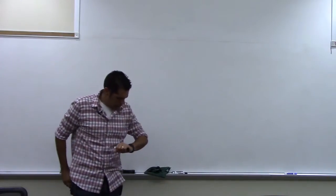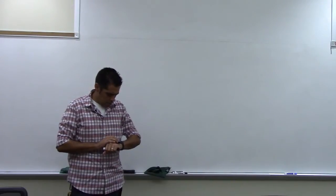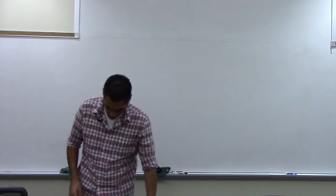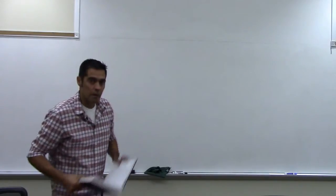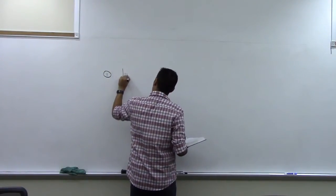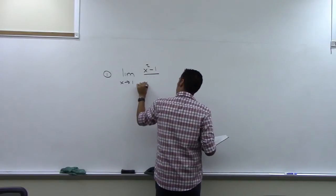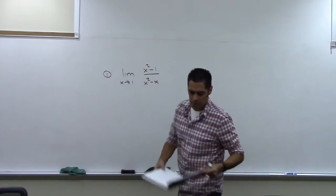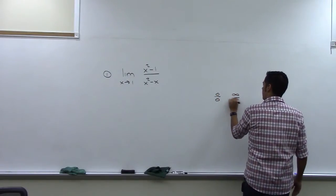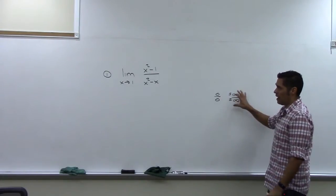We're going to be working the solutions for L'Hopital's Rule problems 3-7. There are a lot of problems in this section. So what we need to do when using L'Hopital's Rule is to make sure that when we apply the limit, we have either 0 over 0 or infinity over infinity — it doesn't matter if it's plus or minus. One of those two forms we have to have to use the rule.